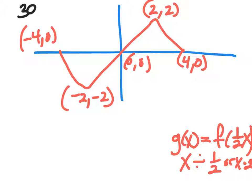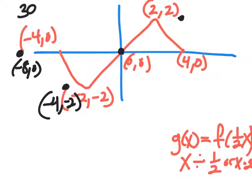Negative 4, 0 would become negative 8, 0. Negative 2, negative 2 would become negative 4, negative 2. 0, 0 would stay 0, 0. 2, 2 would become 4, 2. And 4, 0 would become 8, 0.